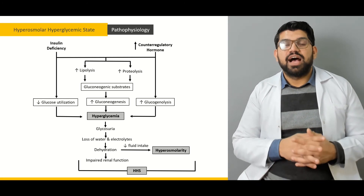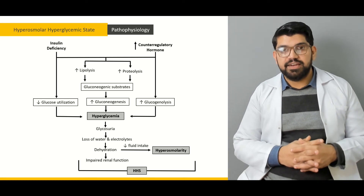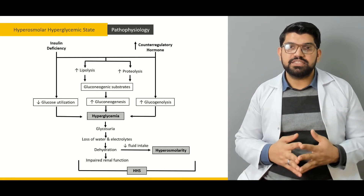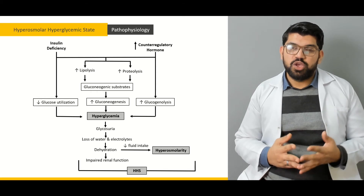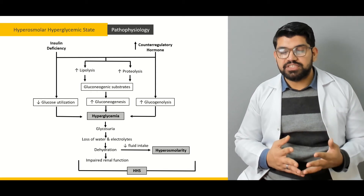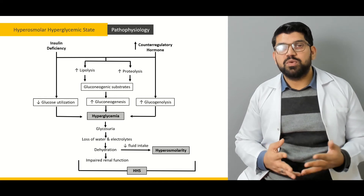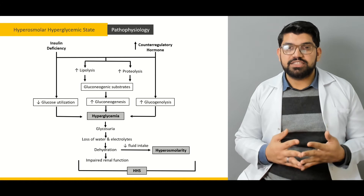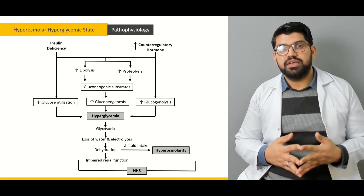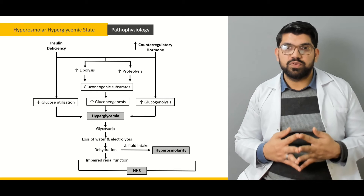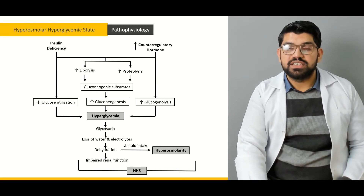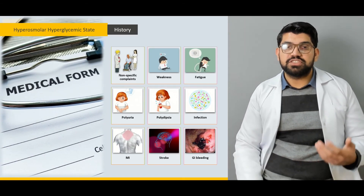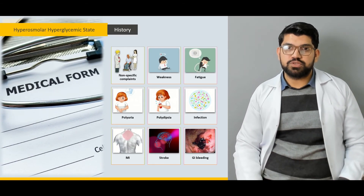Next would be hyperosmolar hyperglycemic state and other diabetic emergencies, mainly in patients with type 2 diabetes. What is the pathophysiology? What happens when there is a decrease in or lack of insulin? What will happen, what are the outcomes, what are the products that are made within the body due to lack of insulin and lack of glucose utilization, and what is their significance?